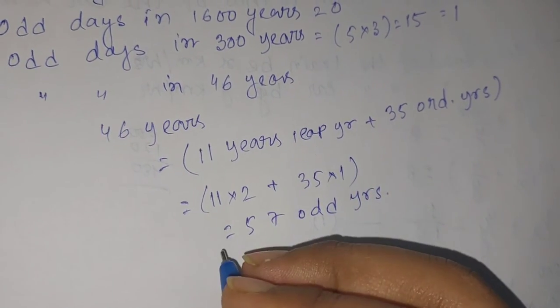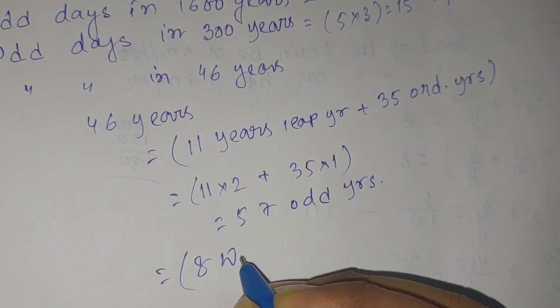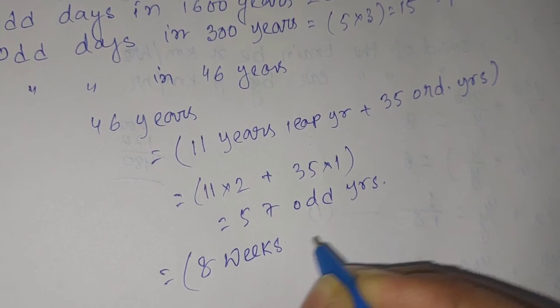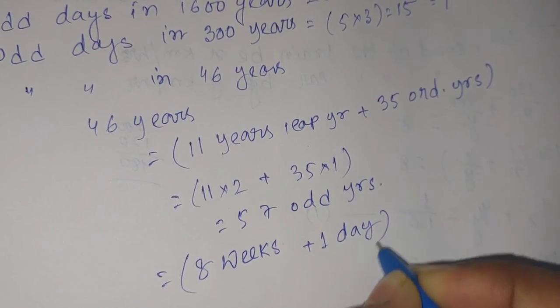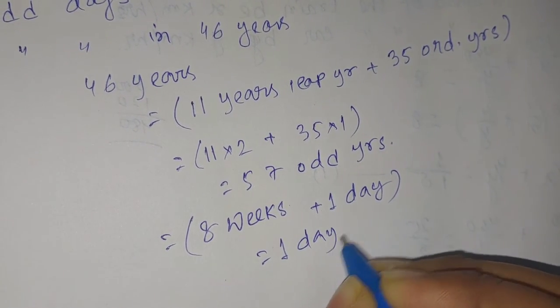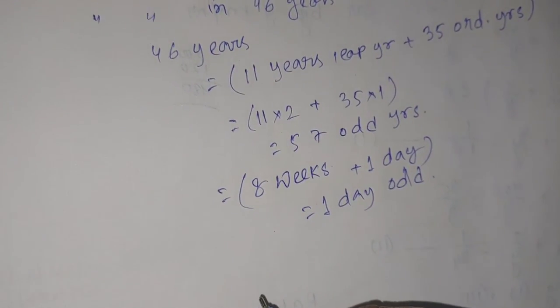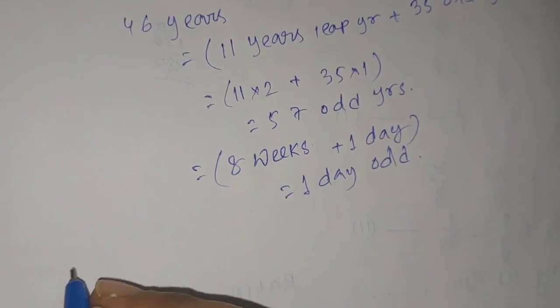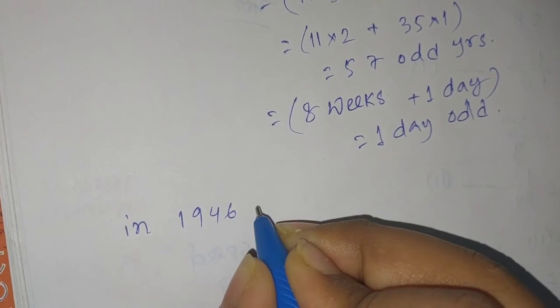57 odd days. Now you know that 57 odd days means I have to find out how many weeks and how many days. So 57 means 8 weeks plus 1 day. So this is one odd day. Now in 1946 years...